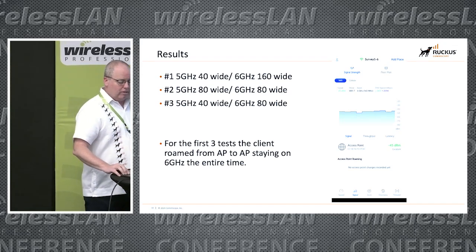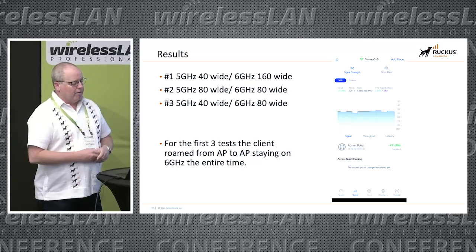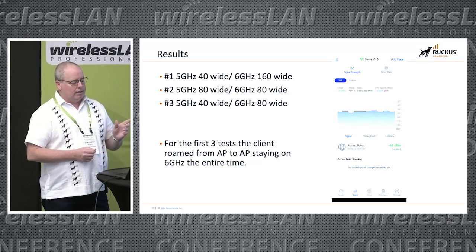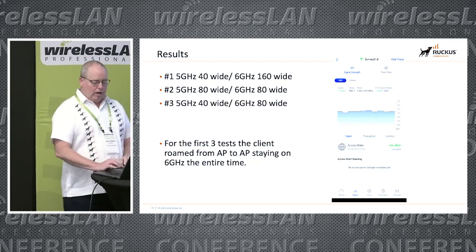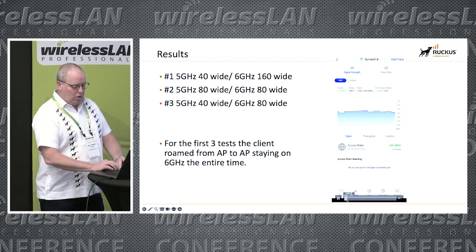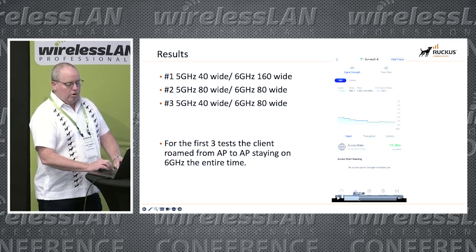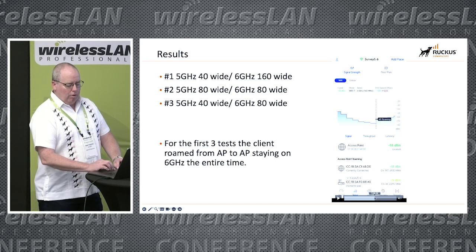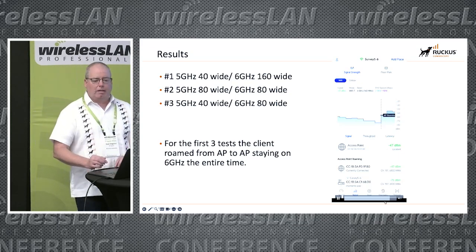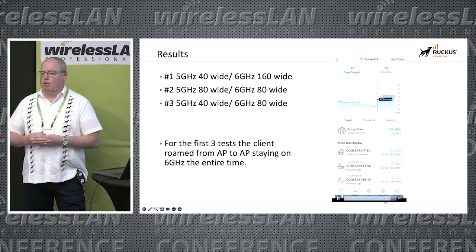In the first test, we did 5 gigahertz at 40 megahertz wide and 6 gigahertz at 160 megahertz wide to see what was going to happen. This is using the Wi-Fi Man app from Ubiquiti on an Android phone. You can see as the client roams, we go from 6 gigahertz across all three APs and back to the original one — nothing spectacular. It stayed on 6 gigahertz the whole time, which was kind of expected.